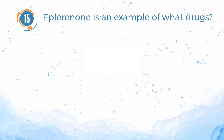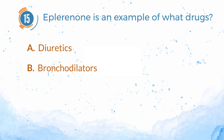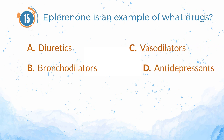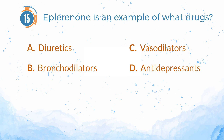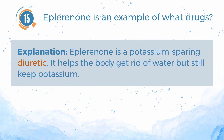Number 15. Spironolactone is an example of what drugs? A. Diuretics. B. Bronchodilators. C. Vasodilators. D. Antidepressants. The answer is A. Diuretics. Explanation: spironolactone is a potassium-sparing diuretic. It helps the body get rid of water but still keep potassium.